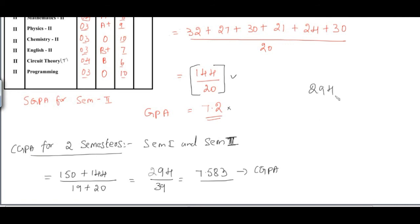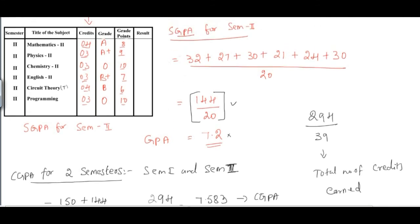294 divided by 39 gives you 7.583, your CGPA for semesters 1 and 2. The denominator 39 is the total number of credits earned so far. If you got a backlog, your total credits will be lower. If you passed all subjects in all semesters, you reach the maximum attainable credits. The numerator 294 reflects your end-semester performance based on grade points obtained.